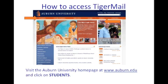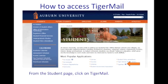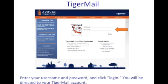Tiger Mail is the official form of communication of Auburn University, so it's important to know how to access it. To do this, go to auburn.edu and click on the Students tab at the top left. Once on the Current Students section, click on the Tiger Mail link in the bottom right. To log in, simply type in your username — which is your initials and some numbers — and password into the empty spaces. This will lead you directly to your inbox.